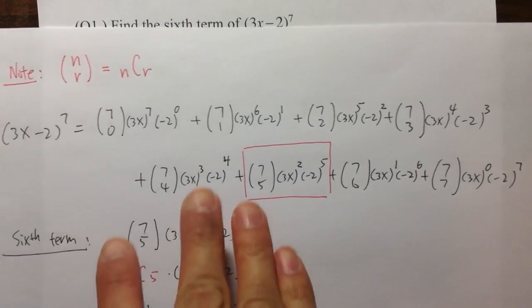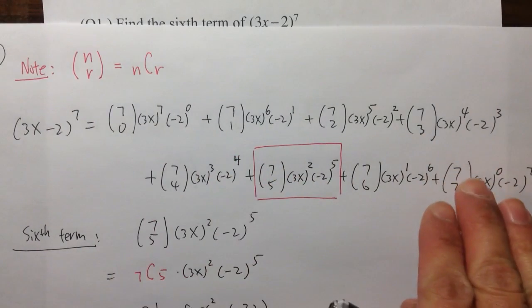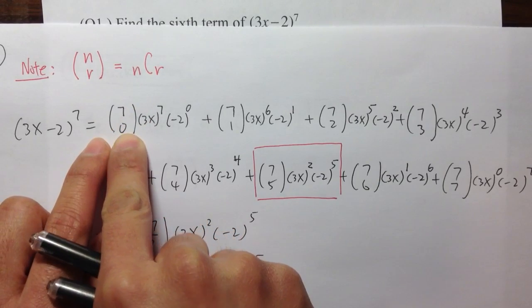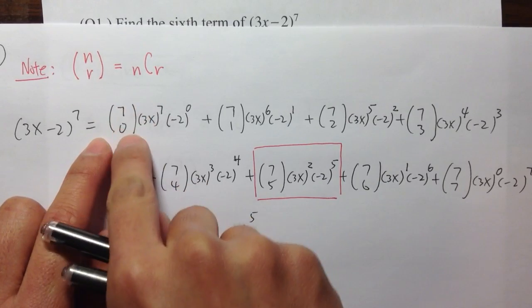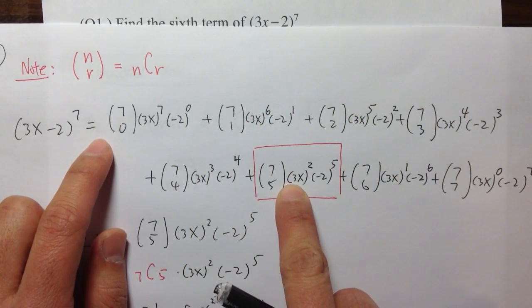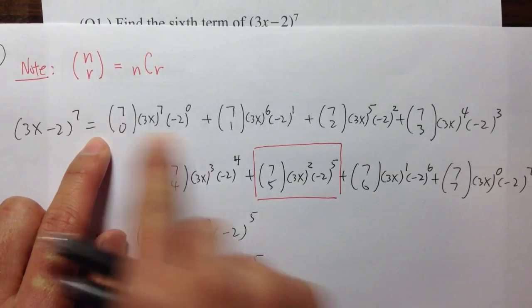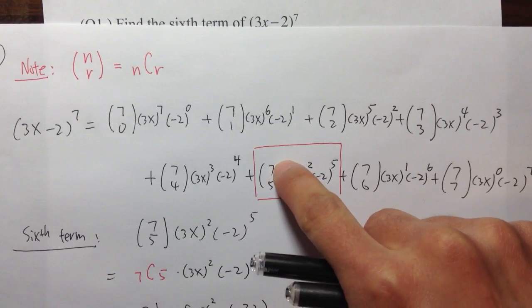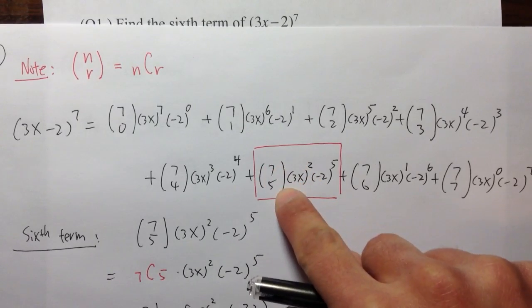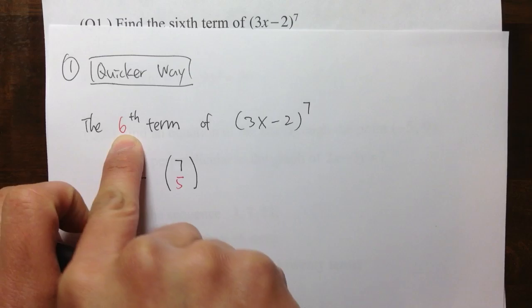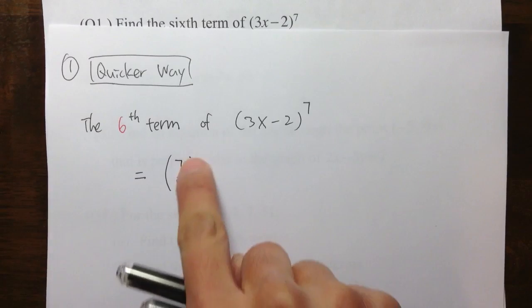As we can see, this is what you will get if you want to write down everything, right? The key right here is, we start off with 7 choose 0. We didn't start off with 1. 7 choose 0, that's the 1st term. 2nd, 3rd, 4th, 5th, 6th. Because we start off with 0, so that's why we lose 1 value. So the binomial coefficient right here, it's actually 7 choose 5. 7 choose 5 for the 6th term. Make sure you do take away 1 from the question that they are asking. The 6th term, minus 1, you get 5. 7 choose 5.